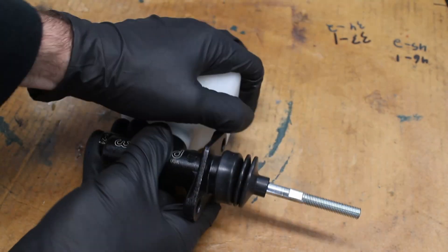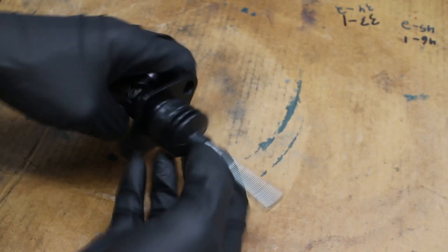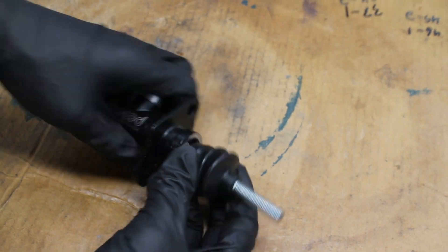Alright, it's time to rebuild this tiny Wilwood remote master cylinder. I started by removing the reservoir and the dust boot.